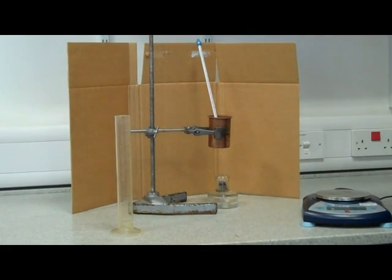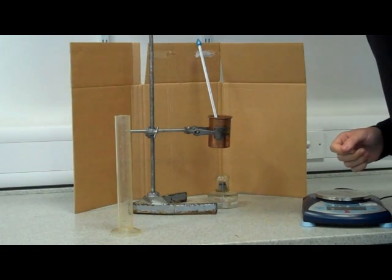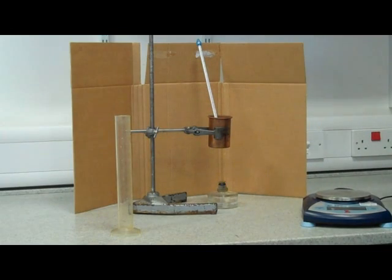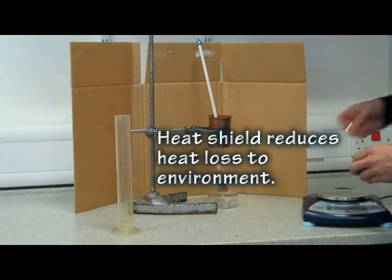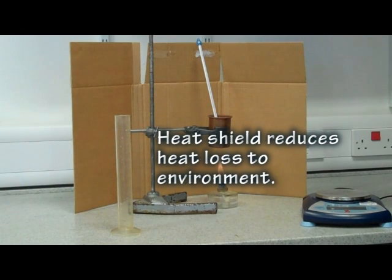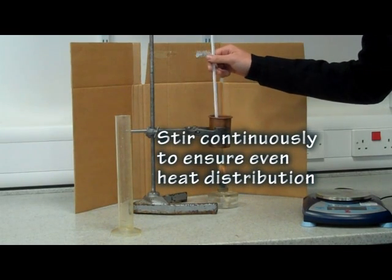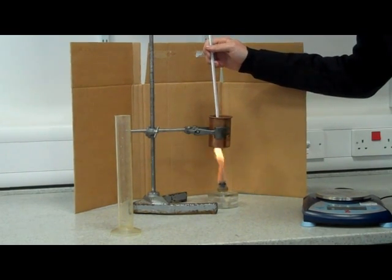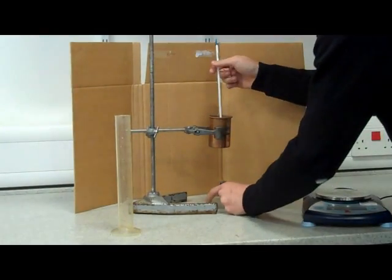We wait until the temperature settles, then record a start temperature. We then light the spirit burner. A heat shield is used to stop some heat being lost into the environment. We continue the experiment without the thermometer touching the bottom of the can to ensure an even heat distribution. When the desired temperature is reached, you blow out the burner and wait until the thermometer has reached its maximum temperature.